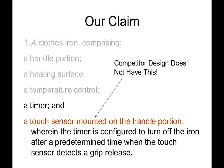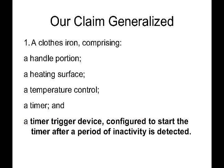While our first claim covered the design we planned to use, it was specific enough that design around is relatively easy. A more generalized claim is harder to design around. Here we have a generalized claim. Instead of specifically calling out a touch sensor or an accelerometer, we simply claim a 'timer trigger device,' which could be anything that can start a timer — it could be an accelerometer, a touch sensor, or even some other thing that has yet to be invented. With a claim like this, even the accelerometer design of our competitor could infringe this claim. Thus, design around is made more difficult.